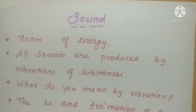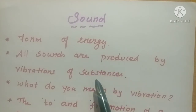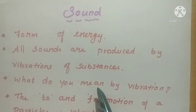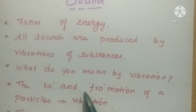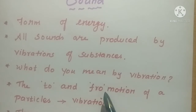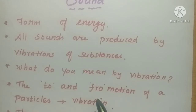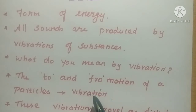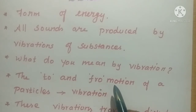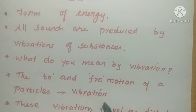How are sounds produced? The sounds are produced by vibration of substances. What do you mean by vibration? The to-and-fro motion of particles is called vibration. For example, if you are jumping on a springboard, the board will move up and down — that is to-and-fro motion. So the particles move here and there — that is to and fro — that is called vibration. All vibrating particles only will produce sound. Without vibration the particles will not produce sound.